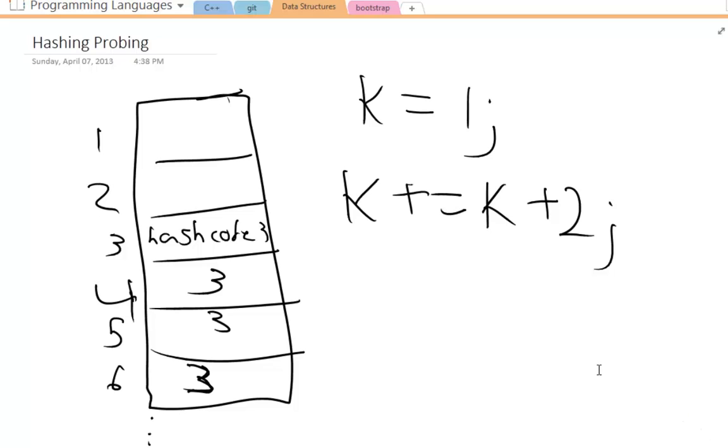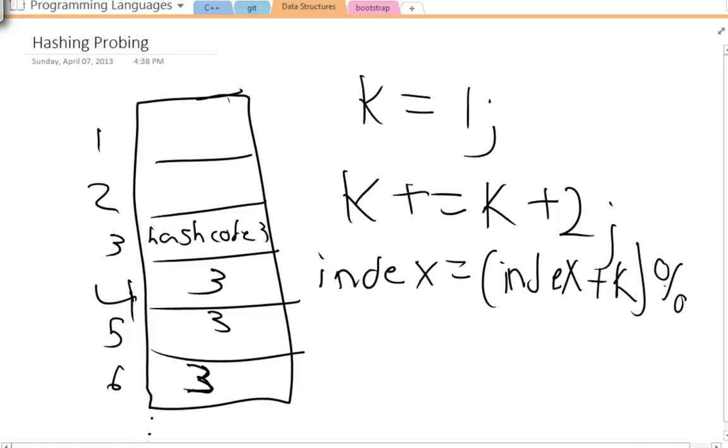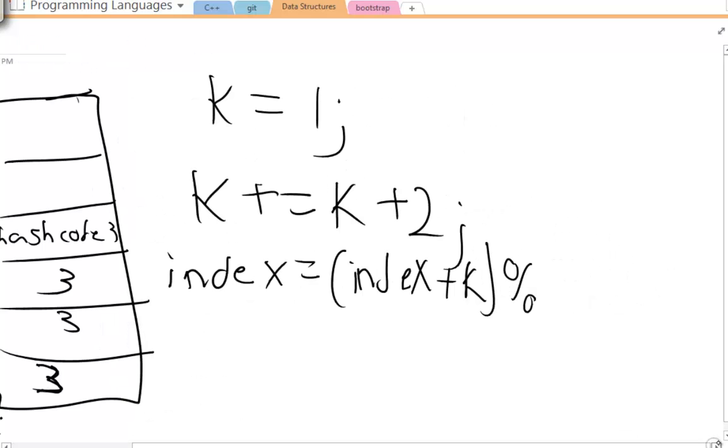So let me show you an example here. While I do have my k values, then I'm going to set the index to equal the old index plus k and I'm going to modulus it with the array length. So we'll just call it table.length.